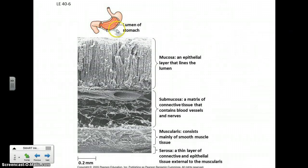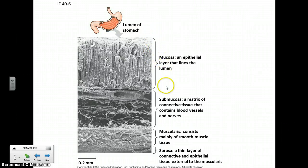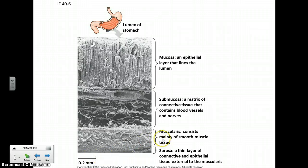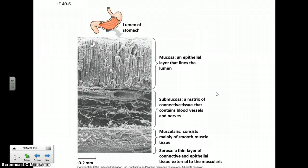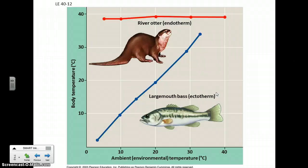So now we take these tissues and put them together into organs. The stomach is a good example because it has epithelial tissue on the very inside secreting digestive enzymes, some connective tissue and blood vessels in there, some nerve tissue, and some muscle that surrounds it and forms a sack that can churn up your food — all these different tissues working together to digest your food.